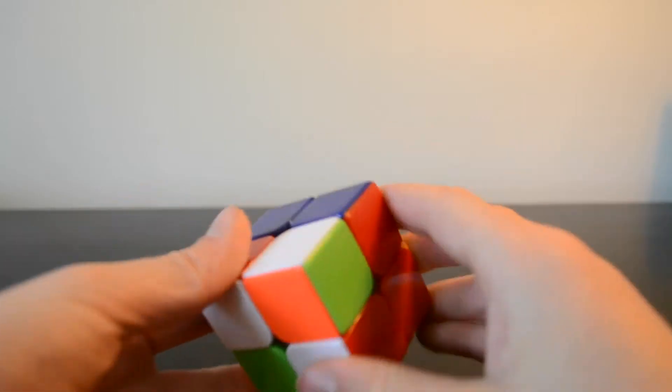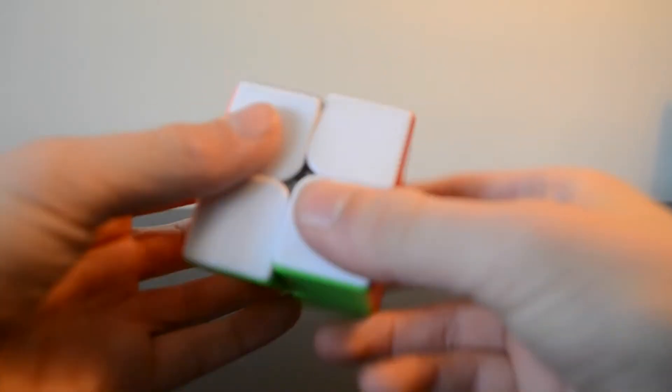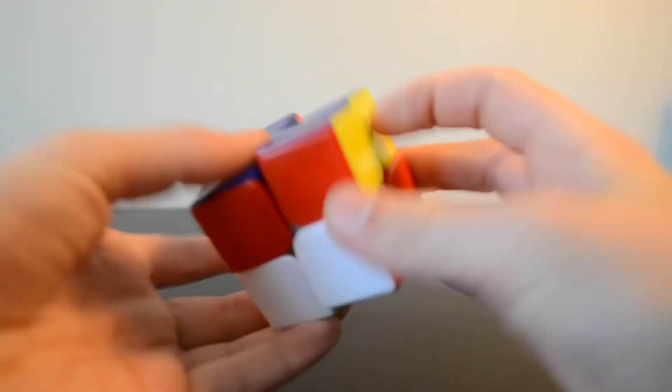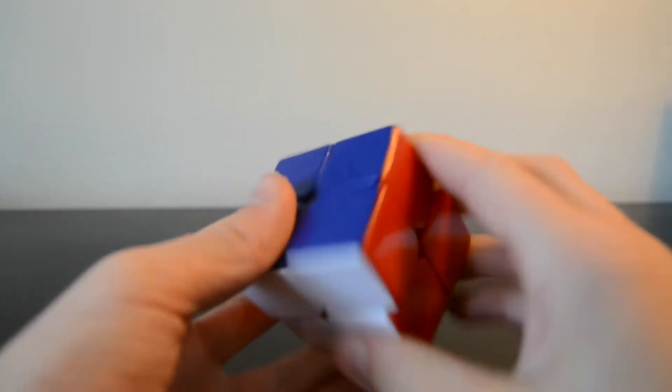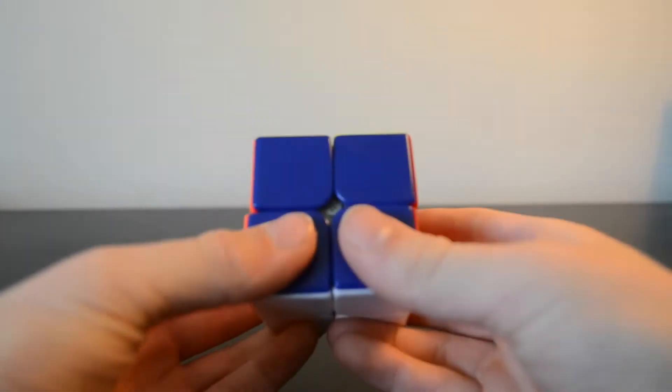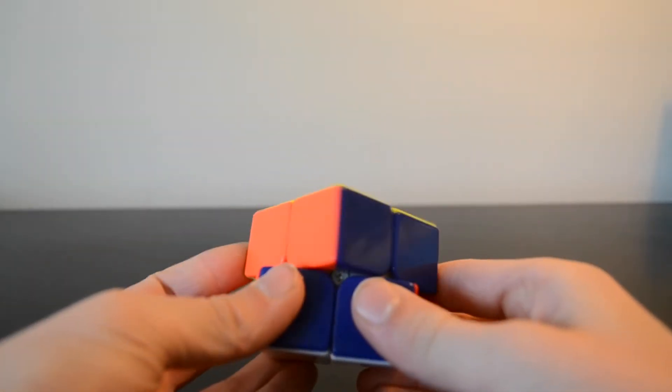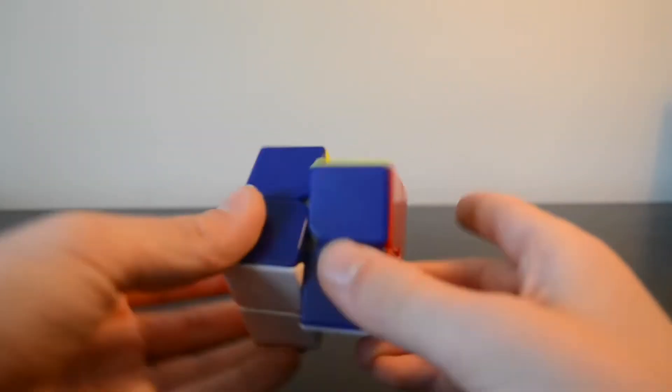So this is my oldest Rubik's Cube. I mean, it's okay. It's not the best. It doesn't have any magnets. It's fully plastic. And then the corner cutting is, you know, it's okay. 45 degrees. Not that good.